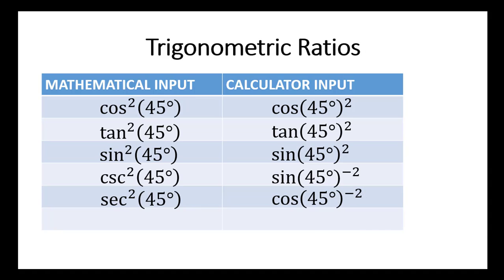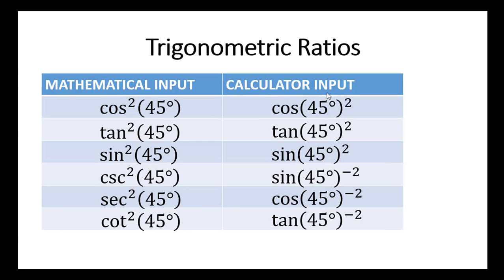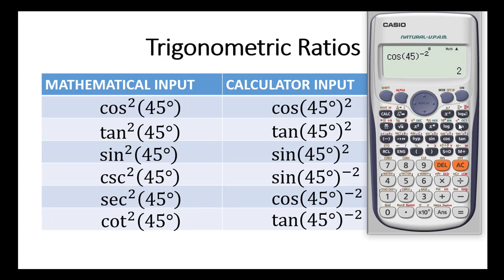Let's consider the last one: cotangent squared of 45 degrees. Remember, the cotangent ratio is the reciprocal of the tangent ratio. So we simply key in tan 45 degrees, close bracket, and introduce the exponent negative 2 — this is the calculator input approach. In an examination, avoid expressing terms using the calculator input approach; rather use the mathematical input approach as that is the standard. So we press tan 45, close bracket, introduce the exponent negative 2, and press equal to. The answer is 1.